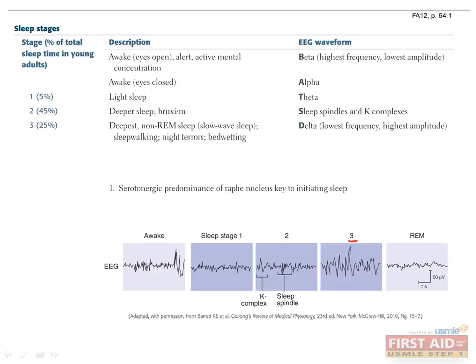The third and fourth stages of sleep of prior terminology have now been combined into a single stage 3 of non-REM sleep. It comprises about 25% of total sleep time in young adults. Here, you see the delta waveform on the EEG, which has the lowest frequency and highest amplitude. This is the deepest stage of sleep, and this is the sleep stage when episodes of sleepwalking, night terrors, and bedwetting occur.